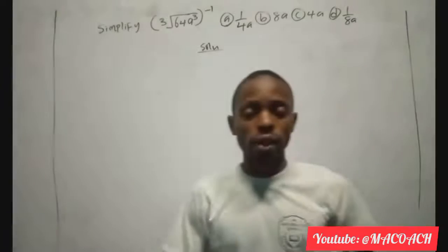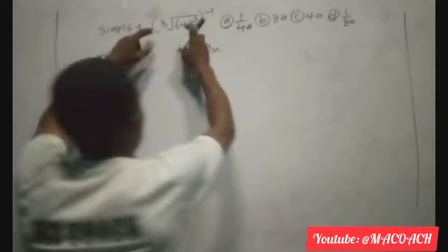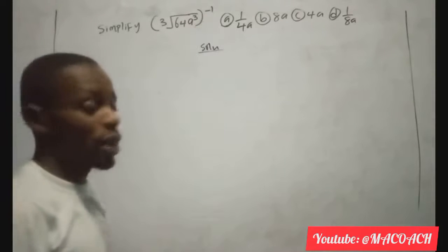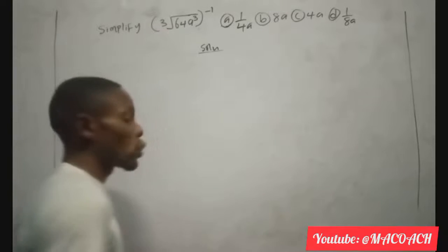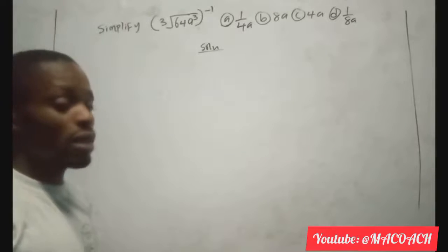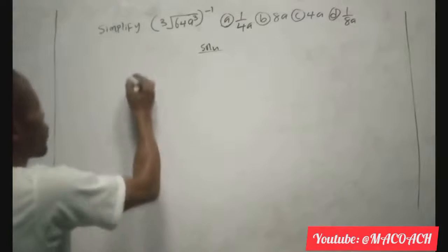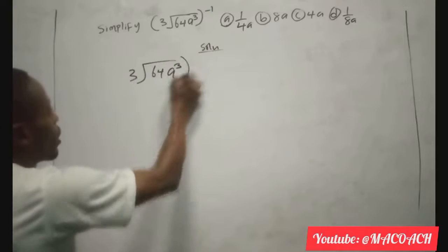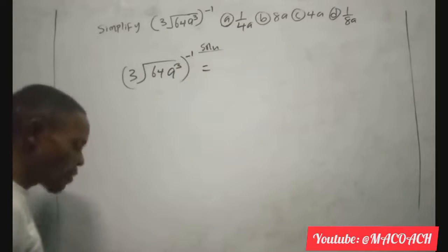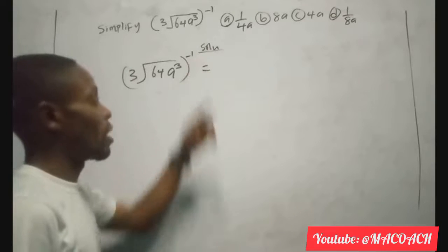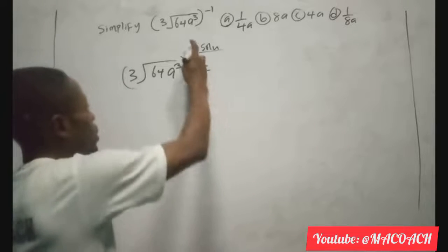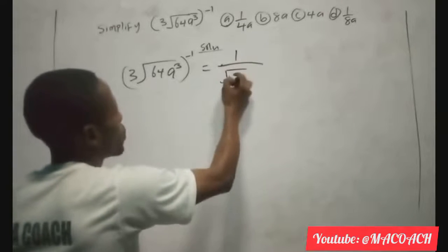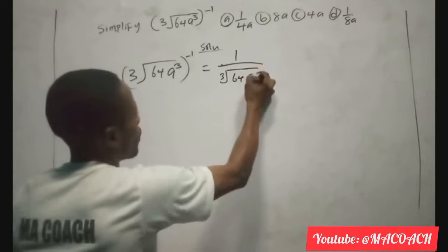This is question 4 for today's class. The question is: evaluate 3 times the fourth root of 64, A to the power 3, to the power of minus 1. The minus 1 can be expressed as 1 over. So this question is an indices question. We have the fourth root of 64, A to the power 3, raised to minus 1. Recall that a negative exponent means reciprocal: so minus 1 means 1 over the fourth root of 64 times A cubed.